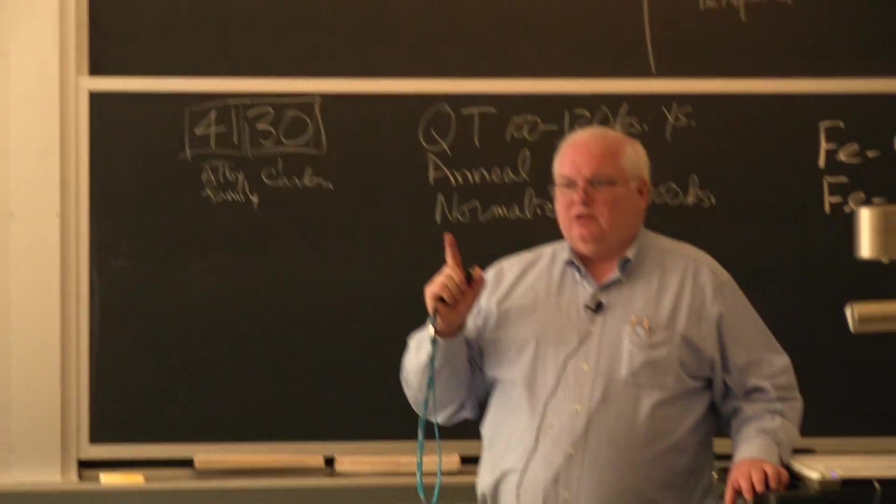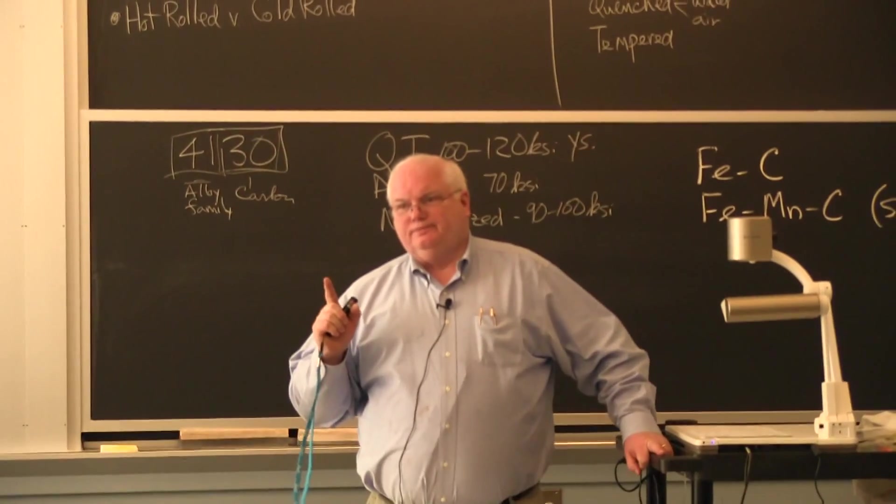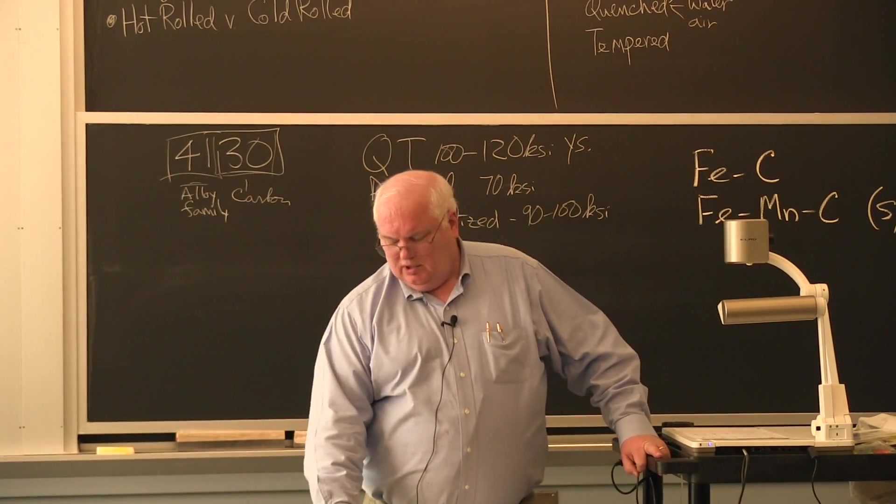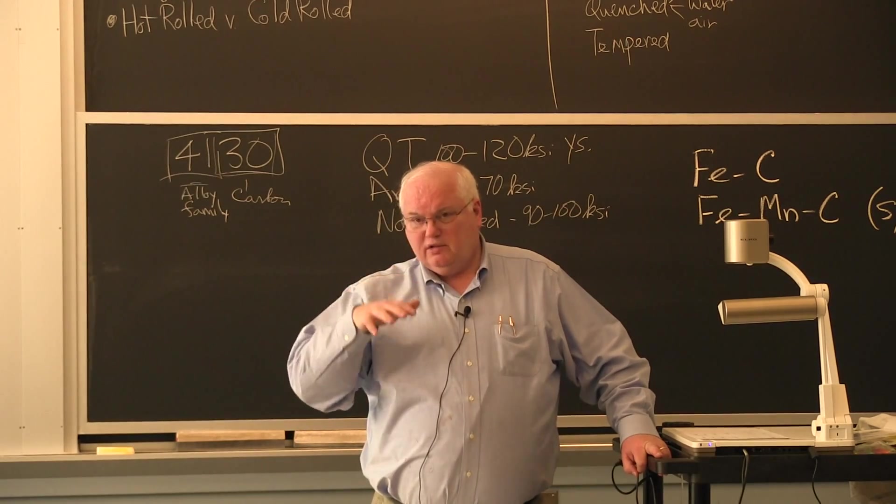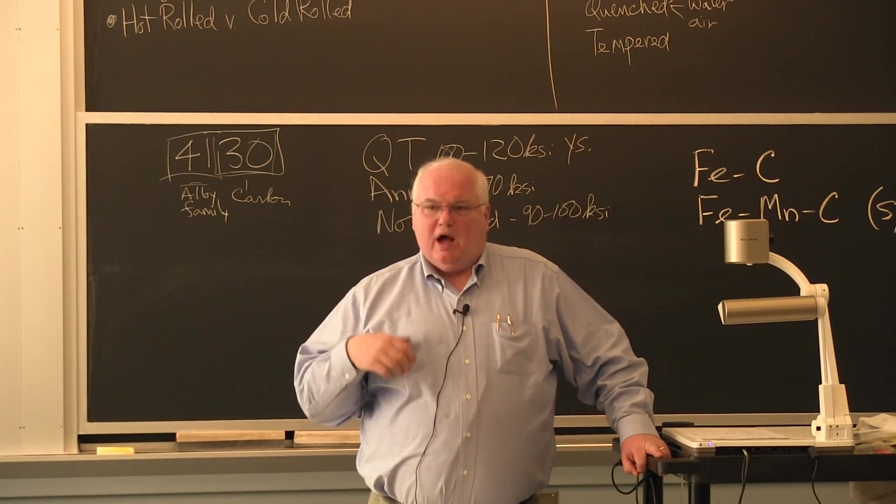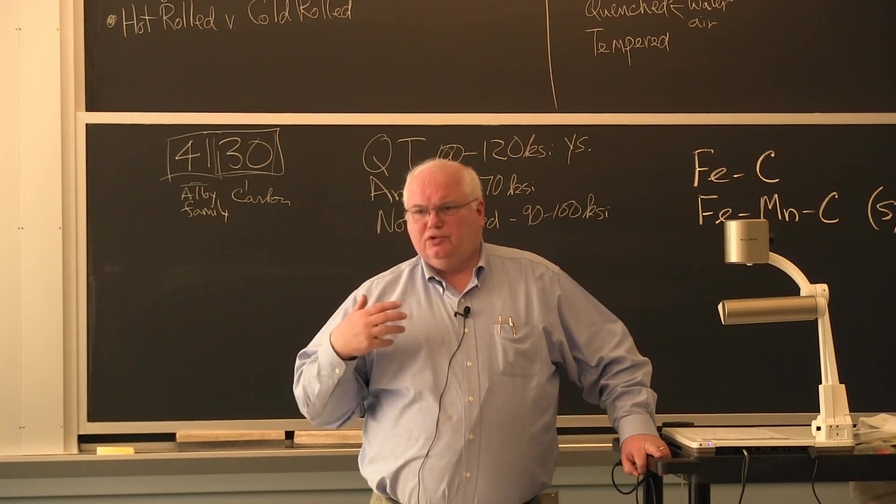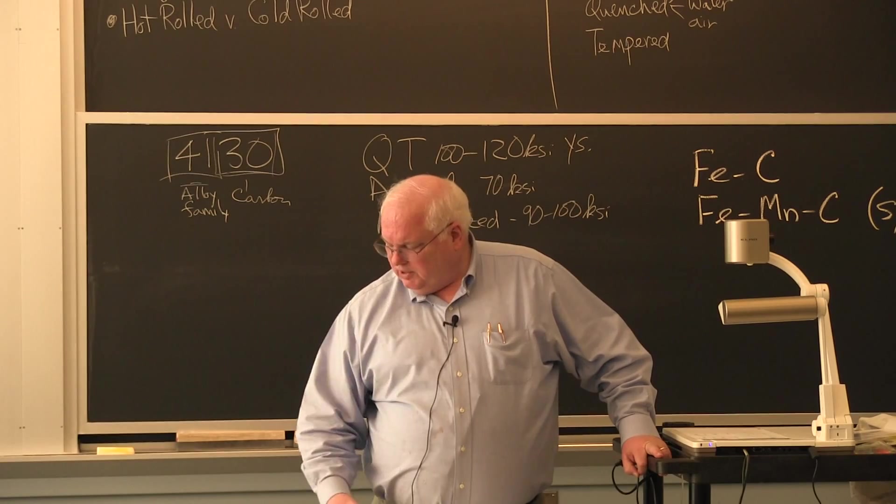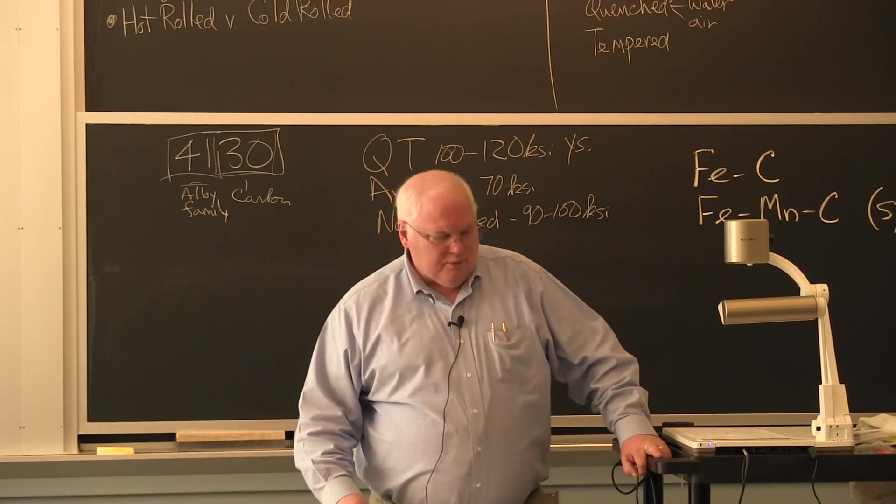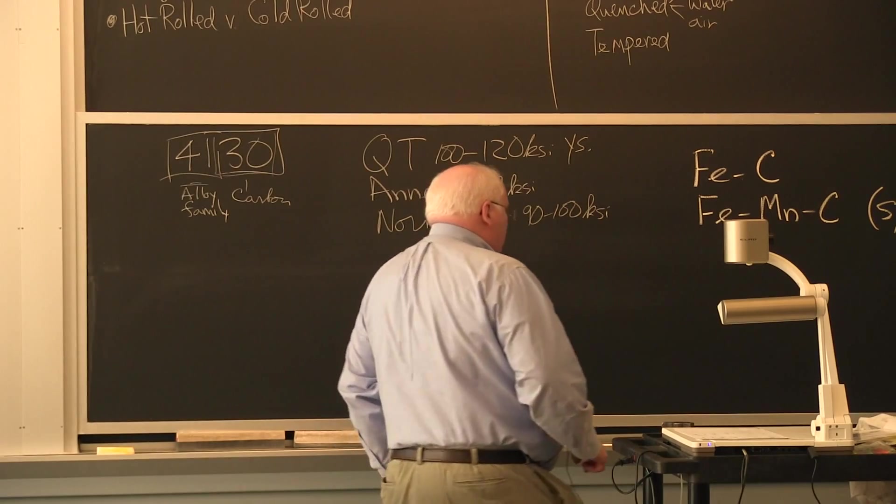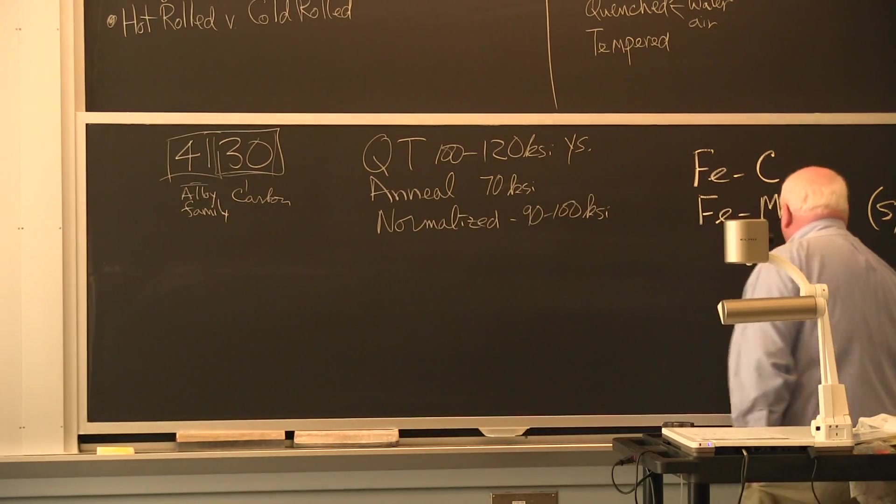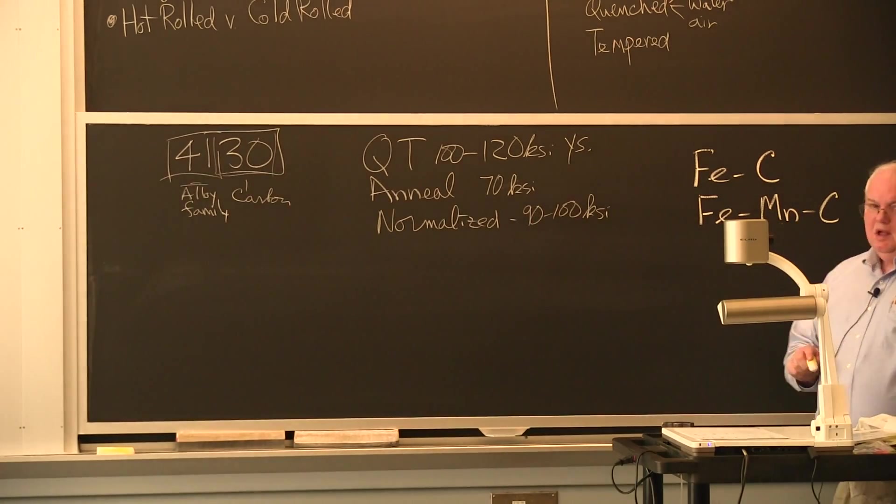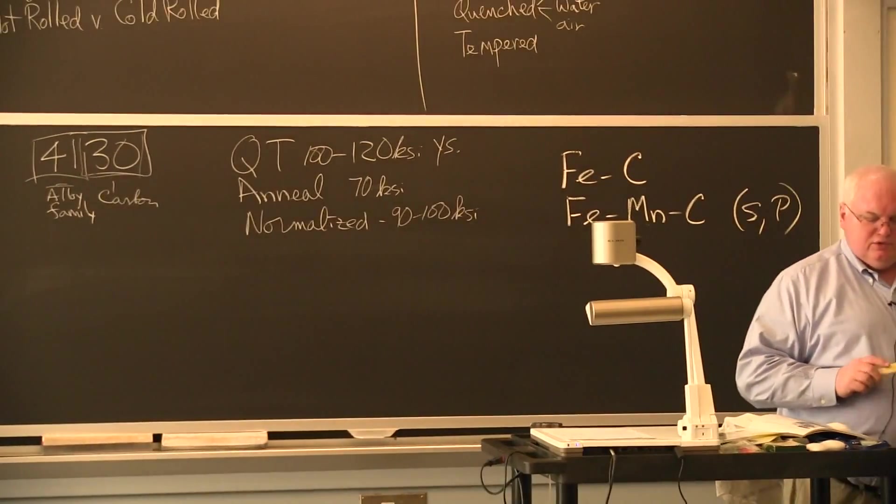Manganese is unique on the periodic table, the only element that will tie up the sulfur. Until we had John Chipman and Nick Grant and other people who were faculty in this department who taught people how to get the right slag composition to draw the sulfur impurity out of the liquid iron, people didn't know how to make iron-carbon steels with lower than 0.4% sulfur. So they always put manganese in and they still do.